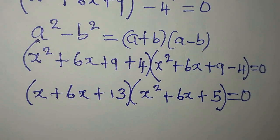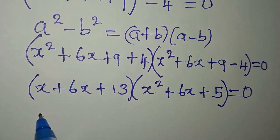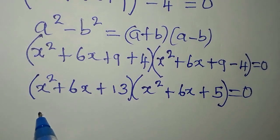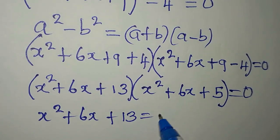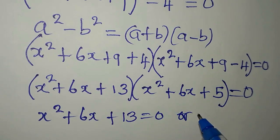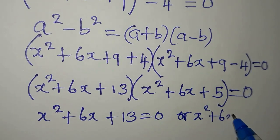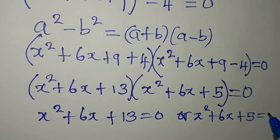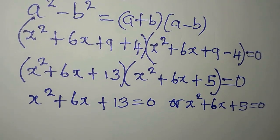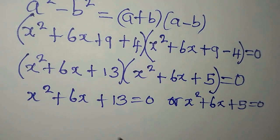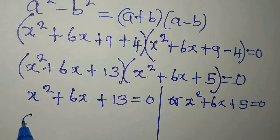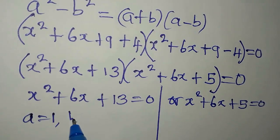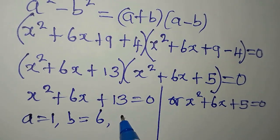What do we do from here? We can say that it is either x squared plus 6x plus 13 equals 0, or x squared plus 6x plus 5 equals 0. So we have two quadratic equations. We are going to pick them one after the other. Let's pick the first one. Our a is 1, our b is 6, and our c is 13.